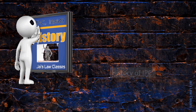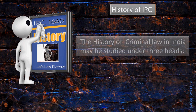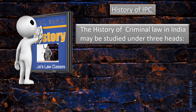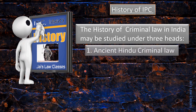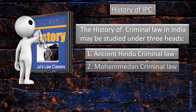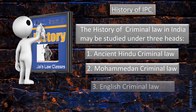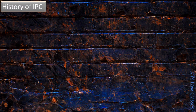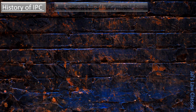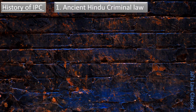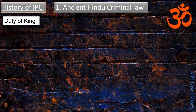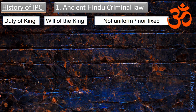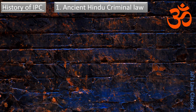The history of criminal law in India may be studied under three heads: Ancient Hindu Criminal Law, Mohammedan Criminal Law, and English Criminal Law. Before the ancient Hindu criminal law, it was a time when law was considered the will of the king, but law was not uniform nor fixed — the law was whatever the king said.